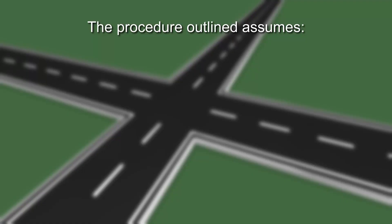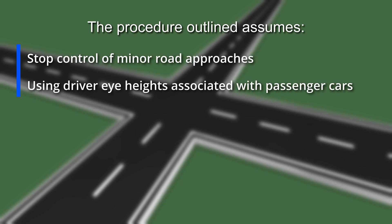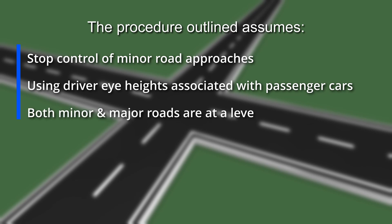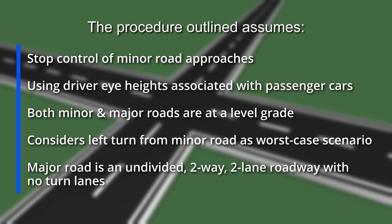The procedure outlined assumes stop control of the minor road approaches, using driver eye heights associated with passenger cars. Both minor and major roads are at a level grade, and it considers a left turn from the minor road as the worst-case scenario. The major road is an undivided, two-way, two-lane roadway with no turn lanes. If conditions at the intersection being evaluated differ from these assumptions, an experienced traffic engineer or highway designer should be consulted to determine appropriate intersection sight distance.